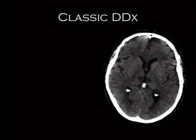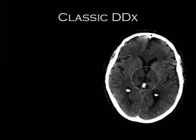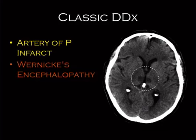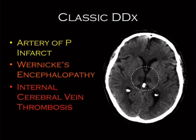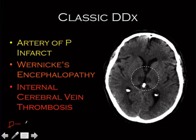There's a differential for bilateral hypodense lesions in the thalami: artery of Percheron, Wernicke's encephalopathy, and internal cerebral vein thrombosis. This would make a good 'which of the following is NOT on the differential' question.